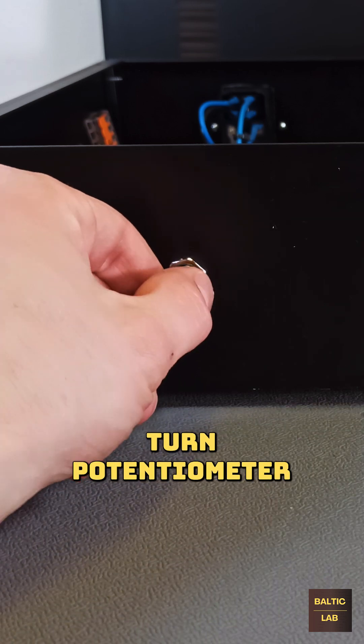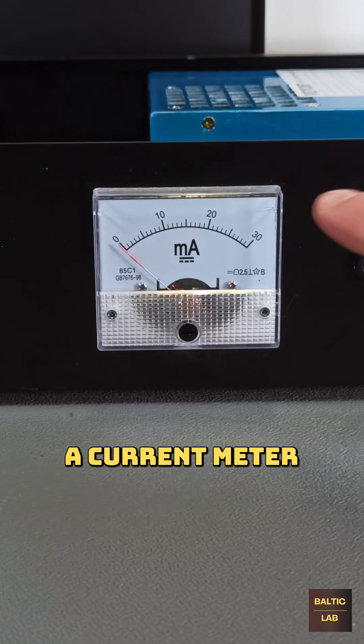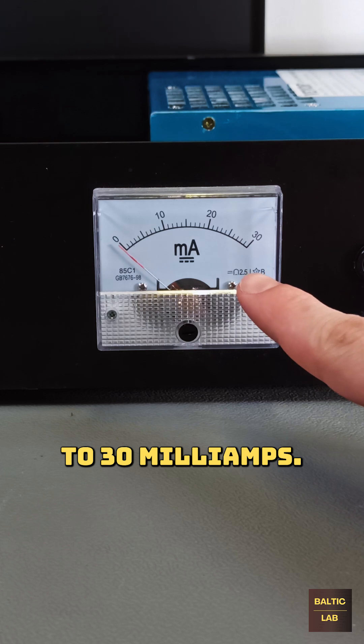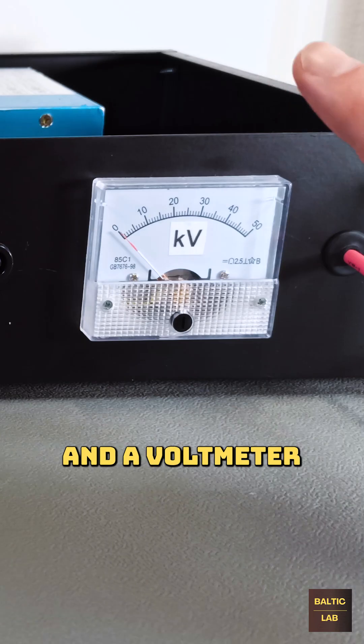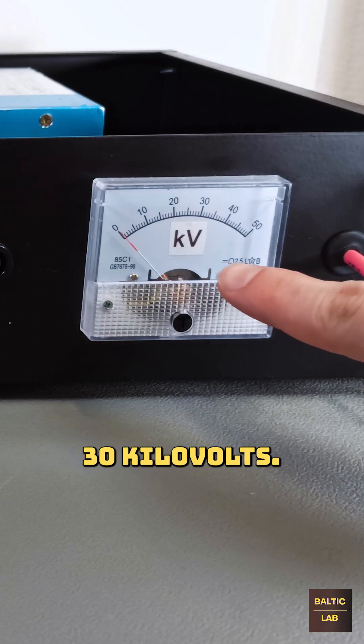A 10-turn potentiometer to adjust the output voltage, a current meter for up to 30 milliamps, a ground connector and a voltmeter for up to 30 kilovolts.